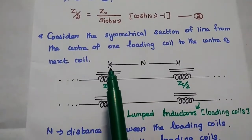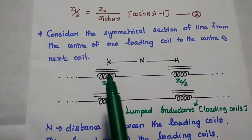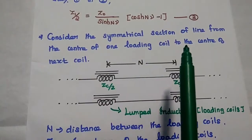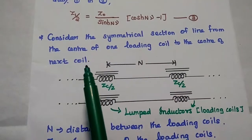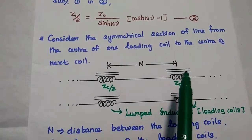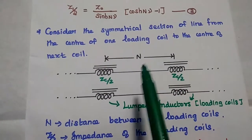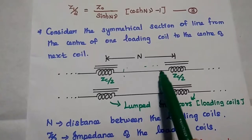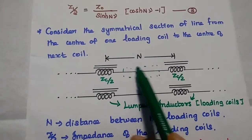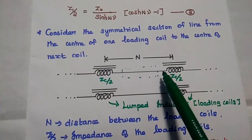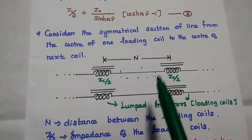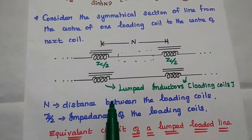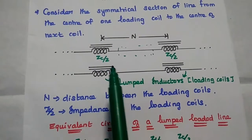Next we are going to introduce the lumped loading method in the transmission line. Here we consider the symmetrical section of the line from the center of one loading coil to the center of the next loading coil. Here we have drawn the equivalent circuit for this line, introducing lumped inductors with spacing capital N. The impedance of the lumped inductors is given as ZC by 2.